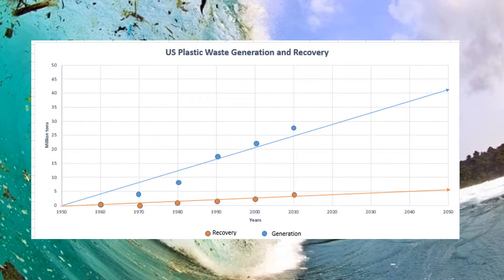In this scatter plot, titled 'US Plastic Generation and Recovery,' it graphically shows the generation of plastic in blue compared to the recovery in orange. The vertical axis is in million tonnes. The horizontal axis is in years, increasing by 10 and extending from 1960 to 2012. The orange line seems to be hitting its highest point in 2010, while the blue line is slowly increasing over the years and has a strong relationship. The correlation of this graph is positive with a strong relationship.